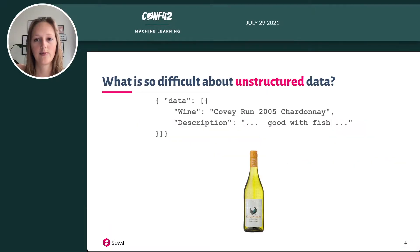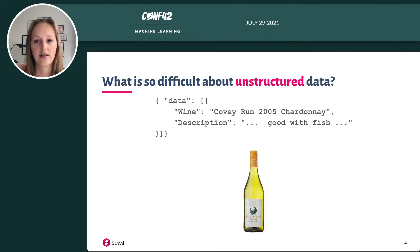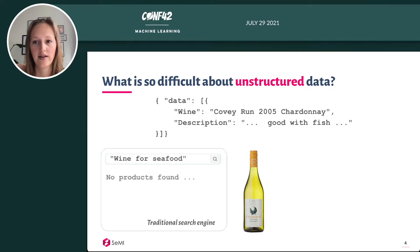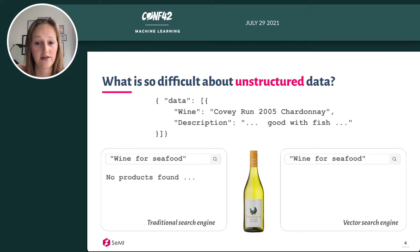Let me give you a simple example of searching through unstructured data. If you want to find information from unstructured text, you will need to use exact matching of keywords to find an answer. For example, if you look for a wine that fits with your seafood dinner, while the wine in your database only tells you that it is good with fish, you will most likely not find this one. If you instead use a vector search engine like VEV8, you can find information in unstructured data based on semantics.